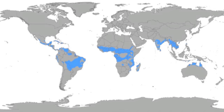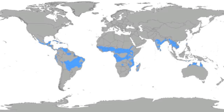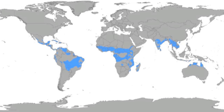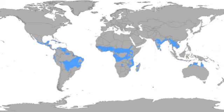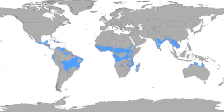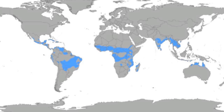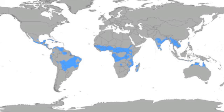Tropical wet-dry is found near the equator, usually on the outer edges of tropical wet climate areas. The largest areas of tropical wet-dry are found in Africa, Brazil, and India. There are only two seasons: wet season, which is the summer, and dry season, which is their winter. Usually the dry season is longer. During the wet season, temperatures average about 77 degrees, and during the dry season, temperatures average about 68 degrees.